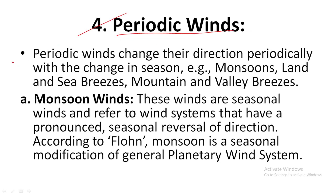Number four: periodic winds. Periodic winds change their direction periodically with changes in seasons. Examples are monsoons, land and sea breezes, and mountain and valley breezes. Monsoon winds are seasonal winds and refer to the wind system that has a pronounced seasonal reversal of directions. According to Flohn, monsoon is a seasonal modification of general planetary winds.